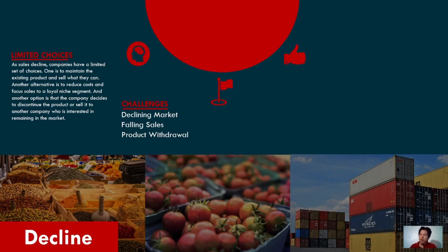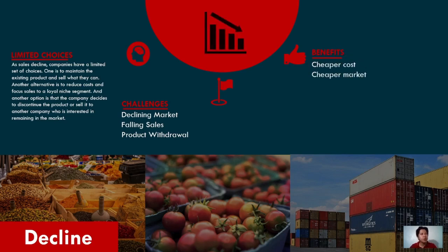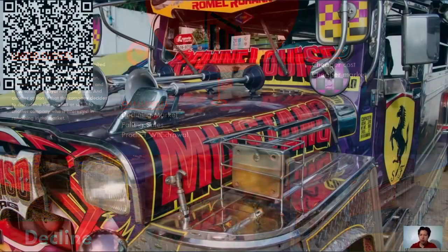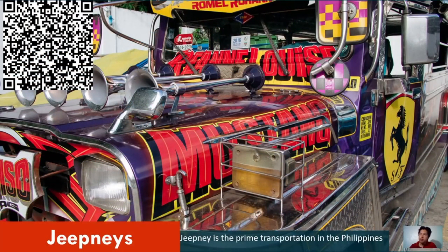It is a steady decline, and if there is no significant innovation through research and development, the product will eventually be phased out of the market. The benefits of the decline stage include cheaper cost and a cheaper market — cheaper to produce, and you can target the lower end of the social structure where there are more people. So there is still an opportunity to earn at this stage, and there are specific segments that will remain loyal to the product. One of the best examples is jeepneys, which are diesel or gasoline-powered vehicles that are currently in the decline stage.